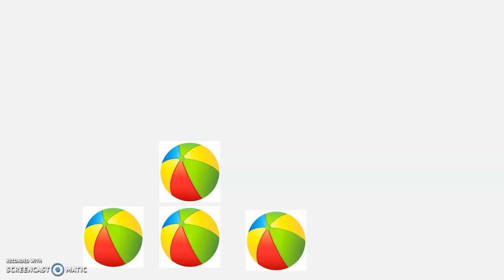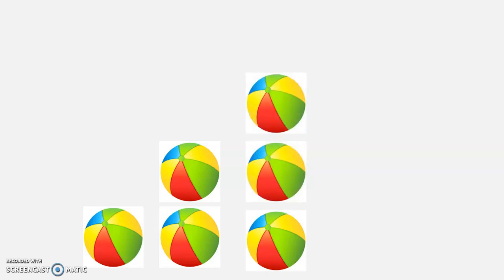Here is one ball. Here is another ball and another ball. Now we've got two balls. Let's count the next one. One, two, three. Now we have three balls.